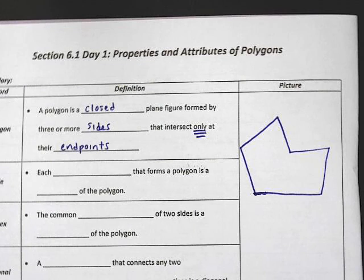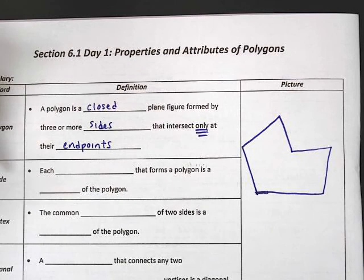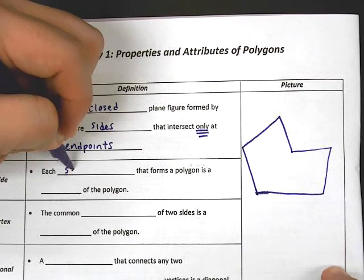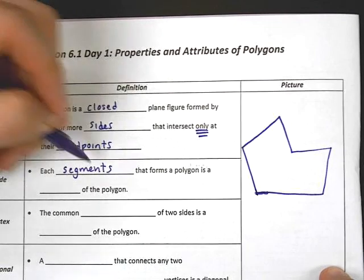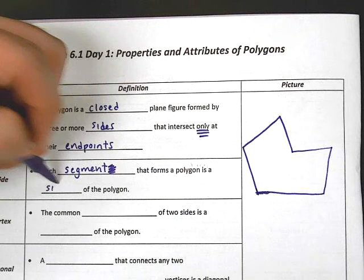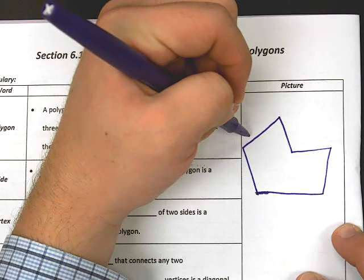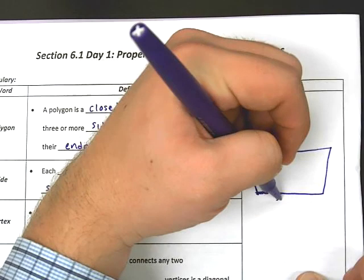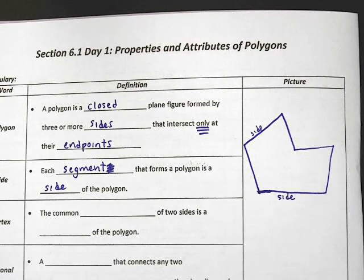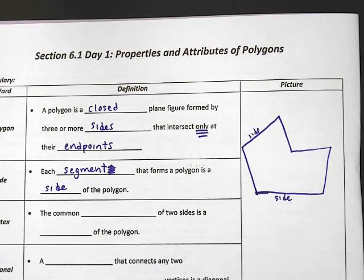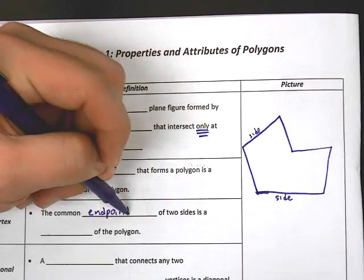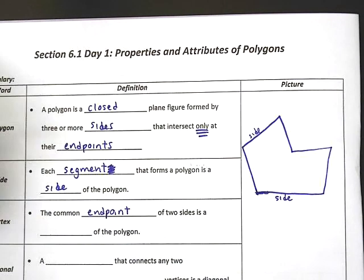We know that the sides of a polygon are the segments. Each segment that forms a polygon is a side of the polygon. So this is a side, this is a side, et cetera. We also know about vertex — what the vertices are of a polygon. The common endpoint of two sides is a vertex of the polygon.